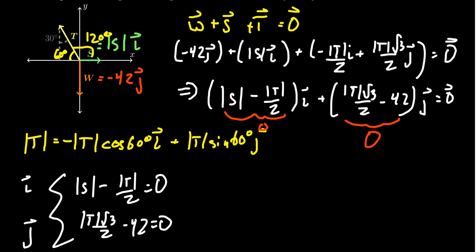In particular, if you look at the one associated to J, the vertical component, there's only one unknown. And that's the magnitude of T. We can solve for the tension very quickly. We can add 42 to both sides.